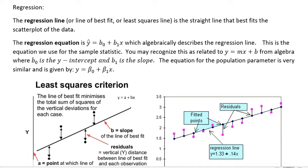The regression line, or line of best fit, or least squares line, is the straight line that best fits the scatter plot of the data. The regression equation is ŷ = b₀ + b₁x, which algebraically describes the regression line. This is the equation we use if we have a sample statistic. If we had a population parameter, we would use a very similar line with beta instead of b.